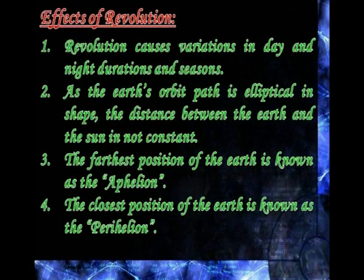Effects of revolution: Revolution causes variations in the duration of day and night, and seasons. As the earth's orbit path is elliptical in shape, the distance between the earth and the sun is not constant. The farthest position of the earth is known as the aphelion, and the closest position is known as the perihelion.